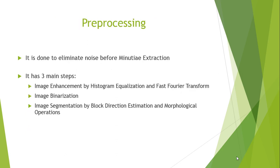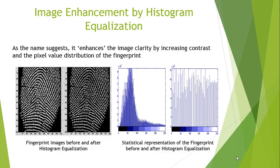Pre-processing is done to eliminate noise before minutiae extraction, and it is done in three steps. First is image enhancement by histogram equalization and fast Fourier transform. Second is image binarization, and third is image segmentation by block direction estimation and morphological operations. In image enhancement by histogram equalization, the image clarity of the fingerprint is enhanced by increasing contrast and the pixel value distribution. The picture quality is seen to improve after applying the histogram equalization technique, and the graphical representation shows that the pixel value distribution is made more prominent, somewhat analogous to a zoomed-in image that reveals better details.